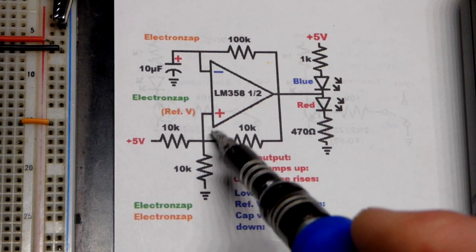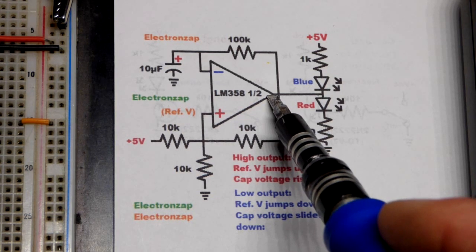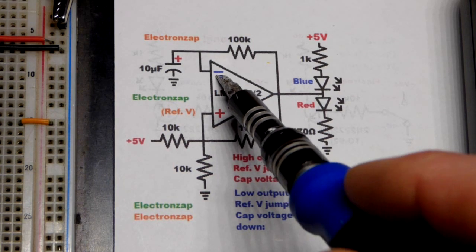We have the output. The most important thing to remember with op amps: the output wants to be more like the non-inverting input, the plus, than the inverting input.